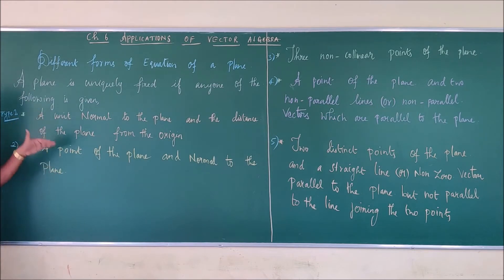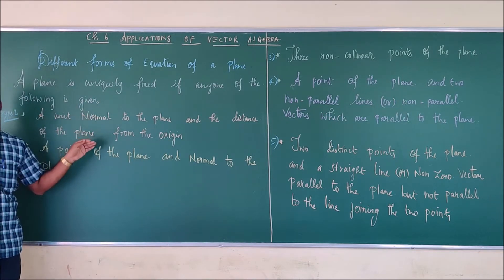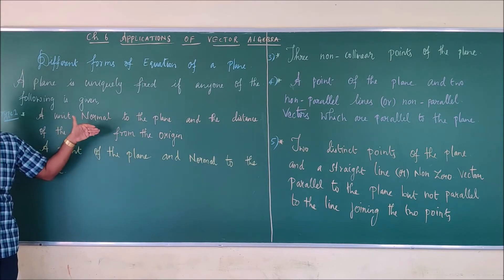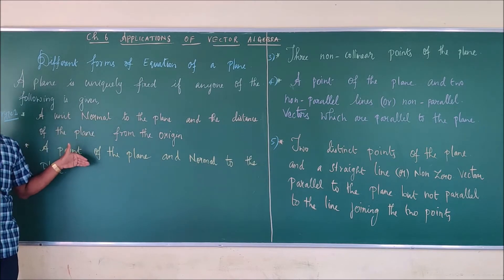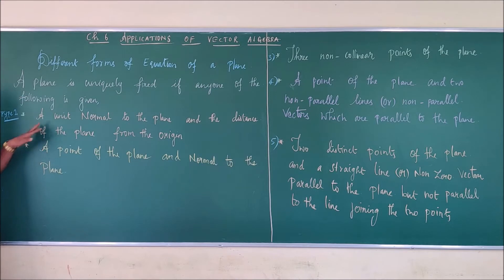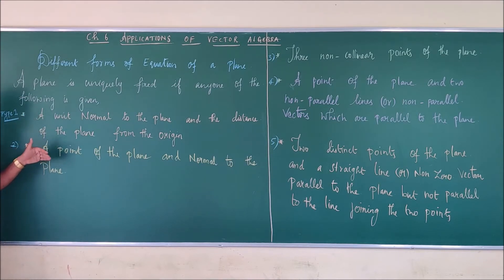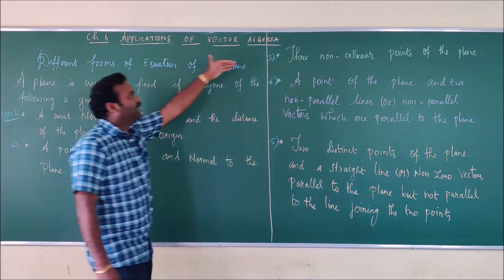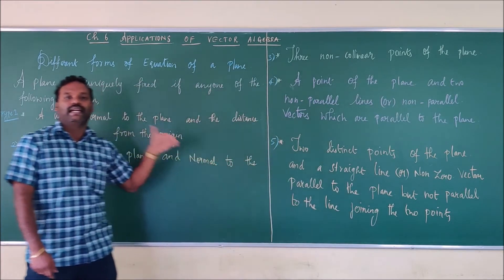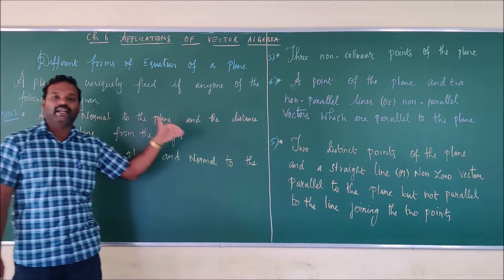For the first two types we are going to discuss only the parametric vector equation and the Cartesian equation. The first two types are less important as far as your examination point of view, because they will be asked either in two-mark or three-mark questions. But types 3, 4, and 5 are very very important as far as five-mark questions are concerned.